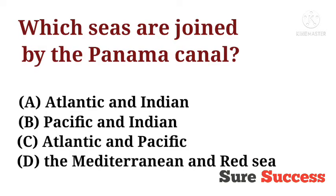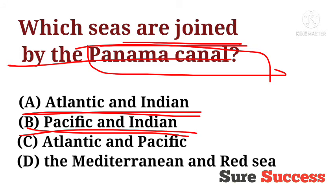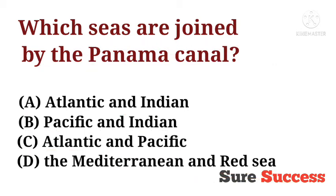Which seas are joined by the Panama Canal? The options are Atlantic and Indian, Pacific and Indian, Atlantic and Pacific, and Mediterranean and Red Sea. The correct answer is Atlantic and Pacific — these are the seas joined by the Panama Canal.